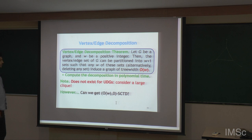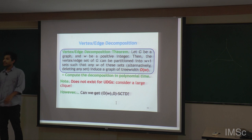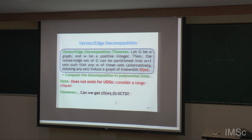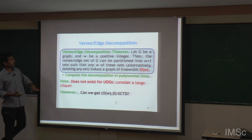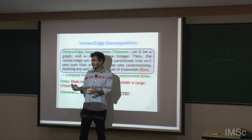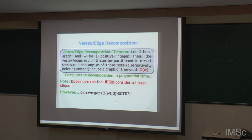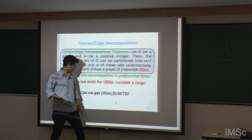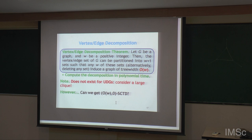Can we get a similar theorem for unit disk graphs? Again, no for the standard version — a complete graph is a unit disk graph (just put all disks at the same place), and for that we cannot get such a decomposition theorem. But can we get a decomposition theorem where instead of bounding tree width, we get a semi-clique tree decomposition of order (W, 0)? The answer is yes.